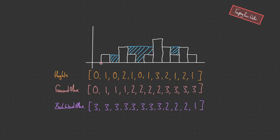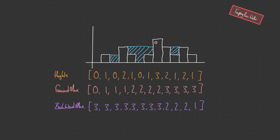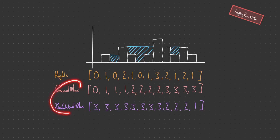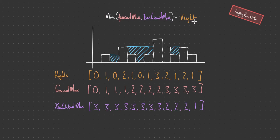Pause the video and see if you can solve it yourself. For each height, let's look at a position where there's water. To calculate the water at that position, at any point we take the minimum between forward max and backward max. For example, forward max is one and backward max is three, so we choose the minimum which is one. Then we subtract the height at that position from that minimum — giving us one unit of water, which is exactly what we want. Checking another point: we choose the minimum between forward max and backward max, which is two, then subtract the height at that position from two.